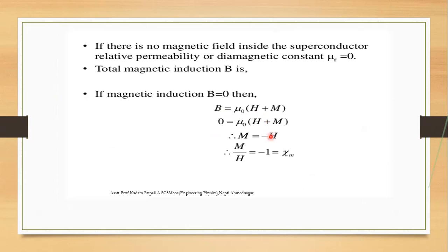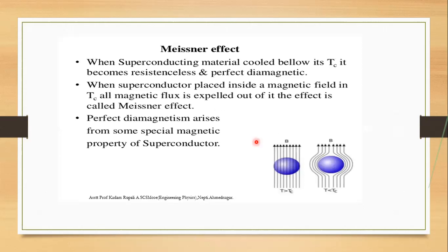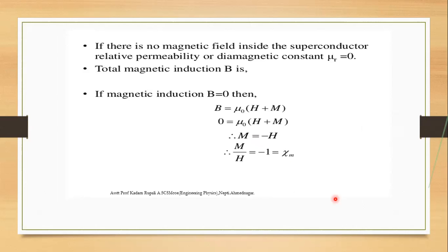For the superconducting state, B = 0, so μ0(H + M) = 0, giving M = −H. Therefore, the magnetic susceptibility ratio M/H = −1. This is the characteristic of perfect diamagnetism in the Meissner effect.